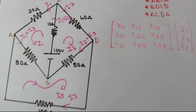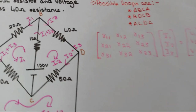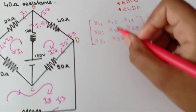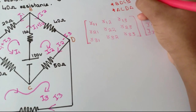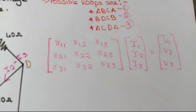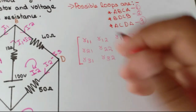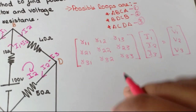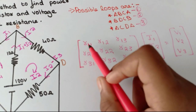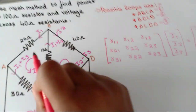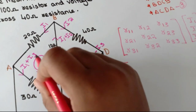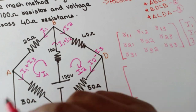This time we are directly going to write it down in the matrix. I'll label the loops as first loop, second loop, and third loop. R11 is the sum of resistance in loop one. The sum of resistance in loop one is 20, 10, and 30, so it's 60.